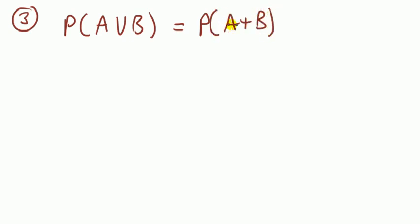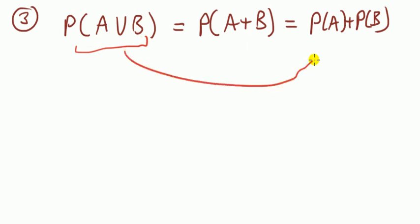At number three, what we have here is this kind of statement. Probability of A union B is equal to probability of A plus B, and then take the probability through the bracket, A plus probability B. Now, we have seen in lecture notes that I'm not saying that this cannot equal this. It's how they've gone about it.